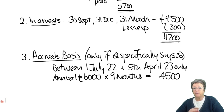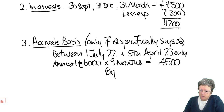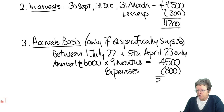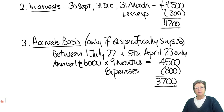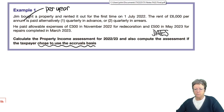It's what's accrued — it's a nine-month period. So the income on an accrual basis is £4,500. Totally different — it's not what you've received. On an accruals basis, all the expenses can be claimed: that's the £300 and the £500. So £3,700 is the figure that needs to go on to the income tax computation. All three situations covered there.